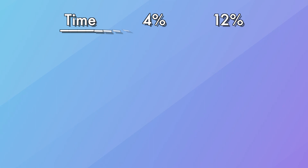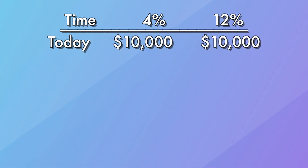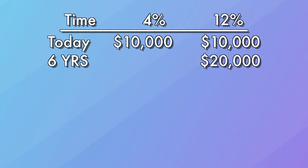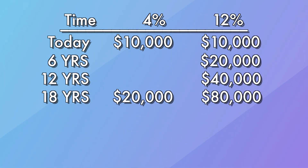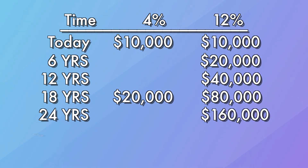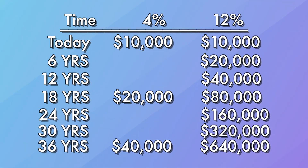Let's compare those two accounts. We have an account with a 4% interest rate and an account with a 12% interest rate. Although we're investing the same amount of money and giving it the same amount of time, because of the effects of compound interest, we see how much more efficiently our money can grow in an account with a higher rate of return. The difference between $10,000 at a 4% rate of return versus a 12% rate of return is $600,000.